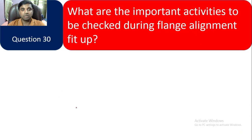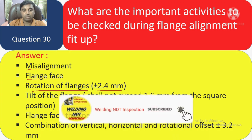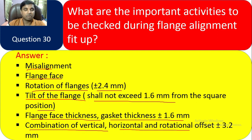Question 30: What are the important activities to be checked during flange alignment? You must check for misalignment, flange face condition, rotation of flange (±2.4 mm), tilt of flange (shall not exceed 1.6 mm from square position), flange face/gasket thickness (±1.6 mm), and combination of vertical, horizontal, and rotational offset (±3.2 mm). These 30 questions, along with the previous 30, cover 60 essential piping inspector interview questions.